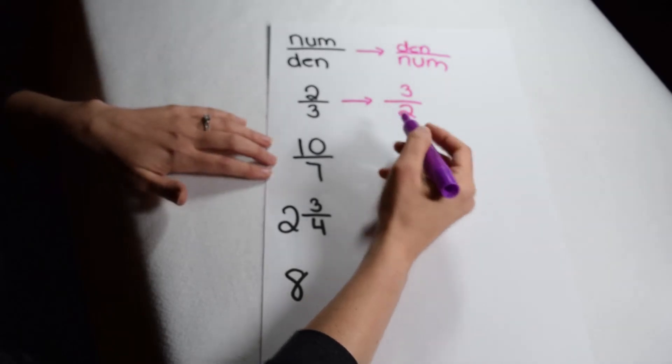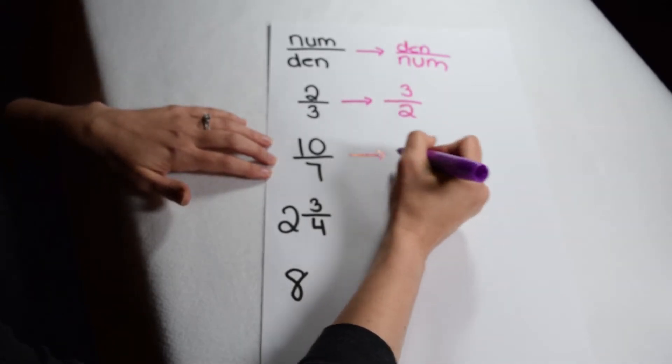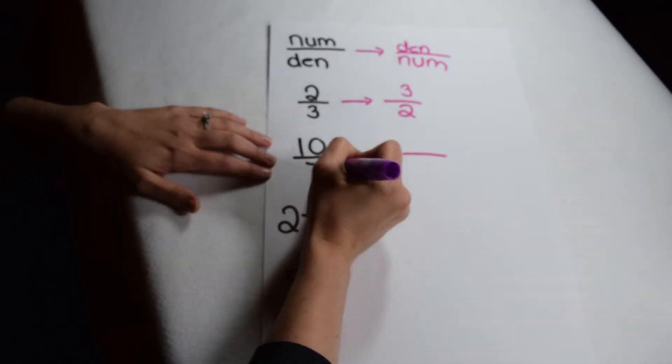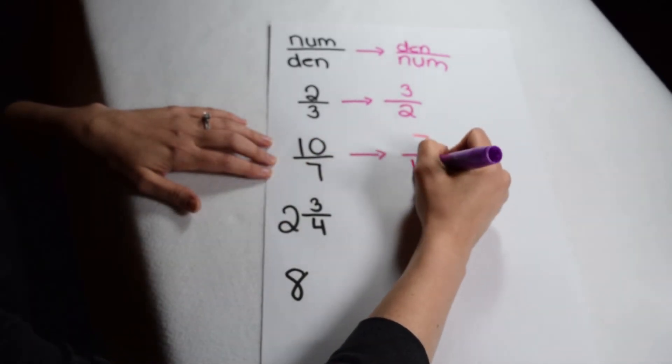It doesn't matter what type of fraction we have. If we have an improper fraction, we can still take its reciprocal. The reciprocal of 10/7 would become 7/10.